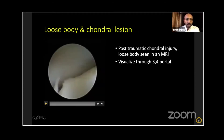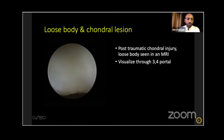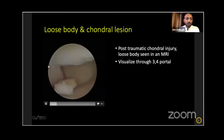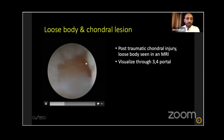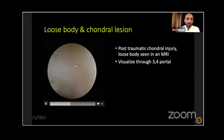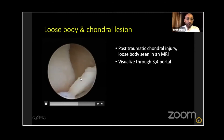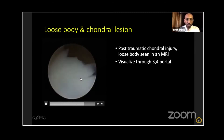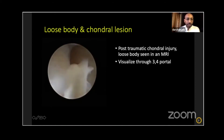Another indication is post-traumatic chondral injuries with loose bodies. We are visualizing through the 3-4 portal — that's the condition on the lunate. This is a loose body visible there, and this is the chondral lesion on the lunate. The loose body needs to be removed and can be taken out through the 6R portal.